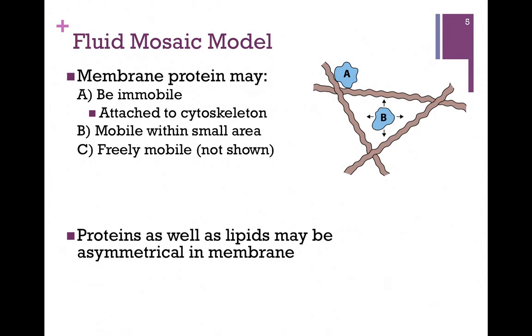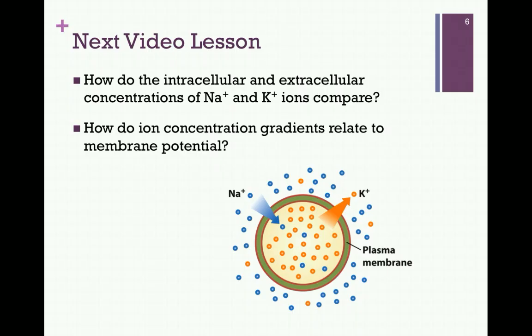So we find that proteins, as well as lipids, may be asymmetrical in the membrane. This concludes our studies in Chapter 8. We'll begin our considerations of membrane transport in Chapter 9 in our next video lesson. We want to examine how these lipid bilayers we considered in this chapter allow us to vary the concentration of ions both inside and outside the cell, and also how these ion gradients allow us to establish a membrane potential.